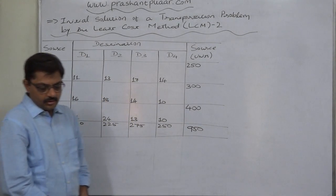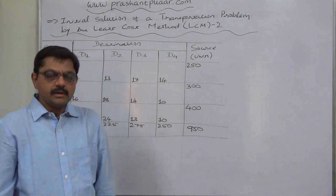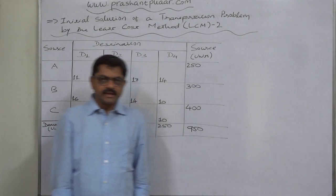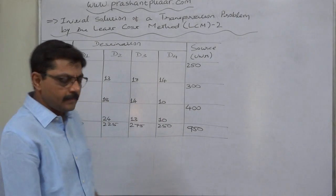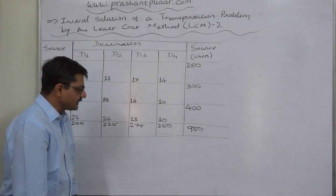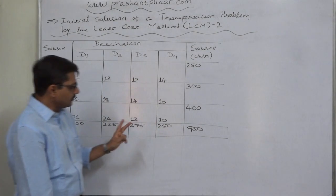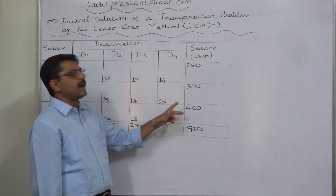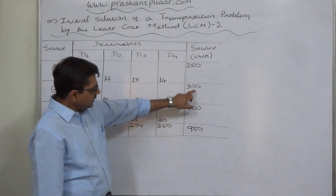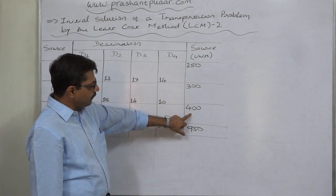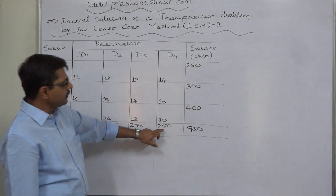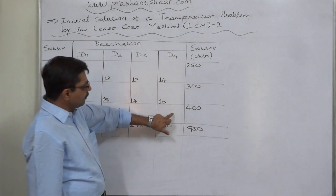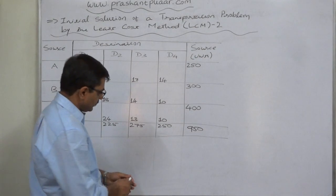Since we cannot break the tie by quantity, there is no hard and fast rule for these exceptional circumstances. As a suggestion, prefer the cell where the allocation is made against a higher supply. Here supply is 300 versus supply of 400, so I personally suggest we go for the cell with supply of 400.